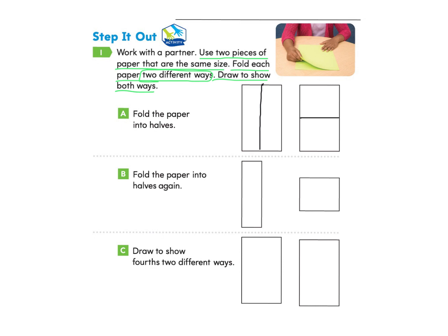Let's look at part b. Part b asks us to fold the paper into halves again. This is a little tricky to show, but see this part right here where I made the fold — imagine that it's folded on top of each other, so we would only have this little piece right here. If I folded it on top, I would only have this shape. Once we've done the fold, they're asking us to fold the paper into halves again.